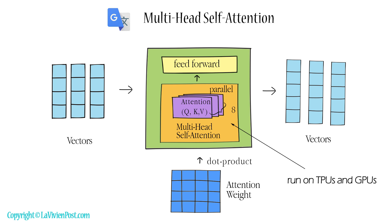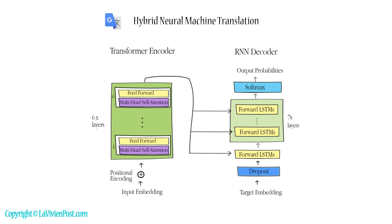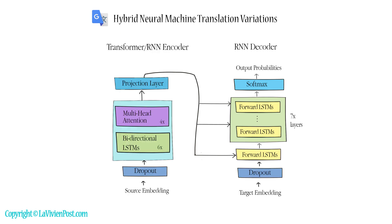In 2018, hybrid architectures of NMT were introduced, combining a transformer encoder and an RNN decoder. Experiments found that hybrid models mixing transformer and RNN both horizontally and vertically in the encoder performed the best.